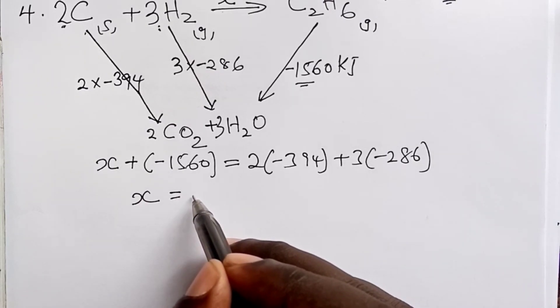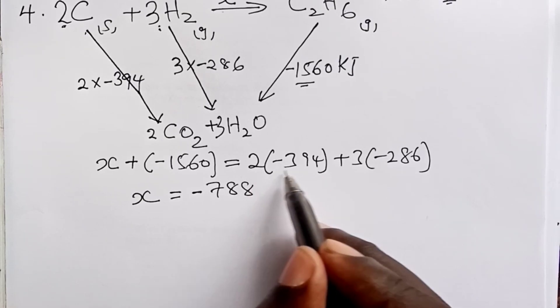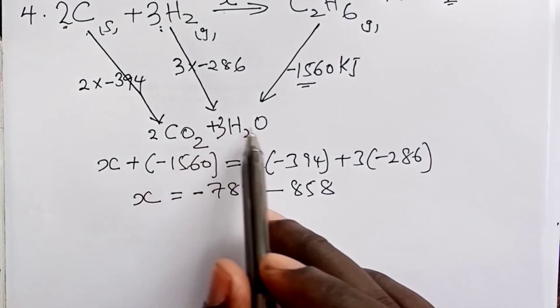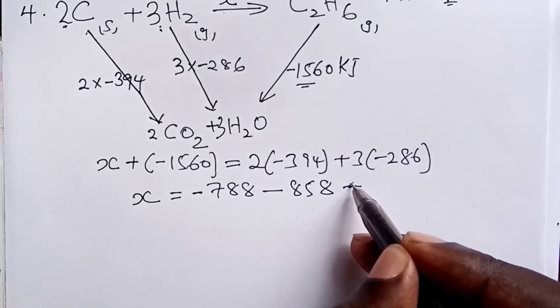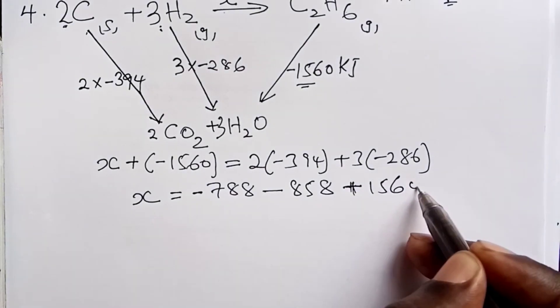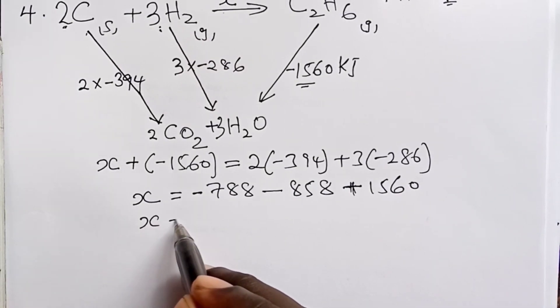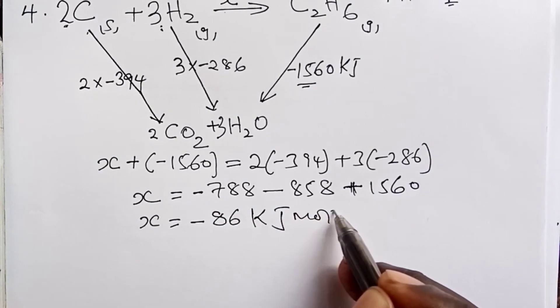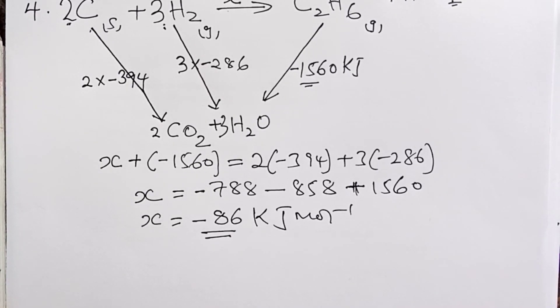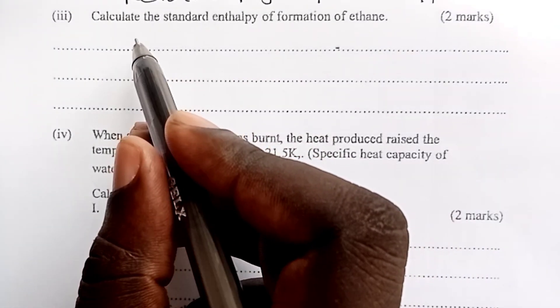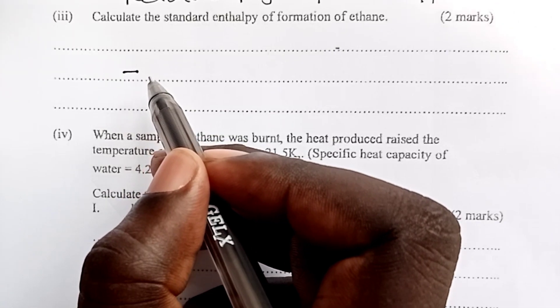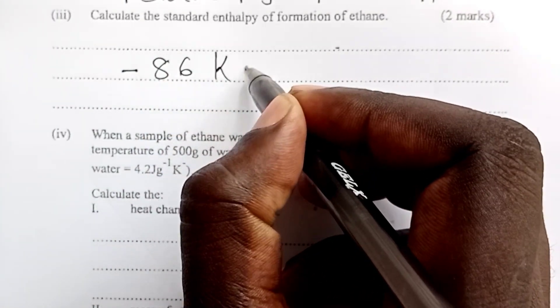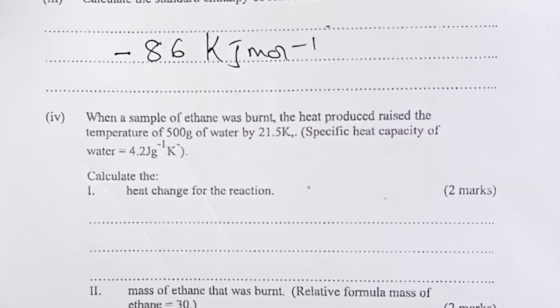So from here, we are able to get X as negative 788. That is the product of the two. Minus 858, the product of the two. And then this one we shall move. We shall add it both sides. So that we are able to eliminate it on the side of X. And when you do this, you get X as negative 86 kilojoules per mole. And that becomes the answer to our question. So we have been able to get the answer to this question as negative 86 kilojoules per mole.